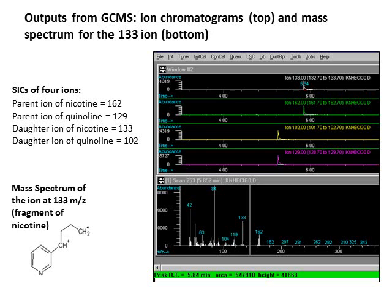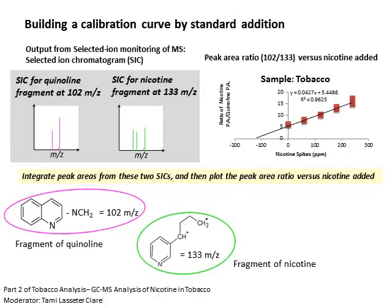Shown on this slide is a screenshot of the ion chromatograms for the four ions of interest in the upper panel. In the lower panel we can see the mass spectrum for the m/z 133 peak, which is a fragment of nicotine. Integrating the peak in the white trace at the top gives us peak area and height information, which you can see in the green box at the bottom of the page.